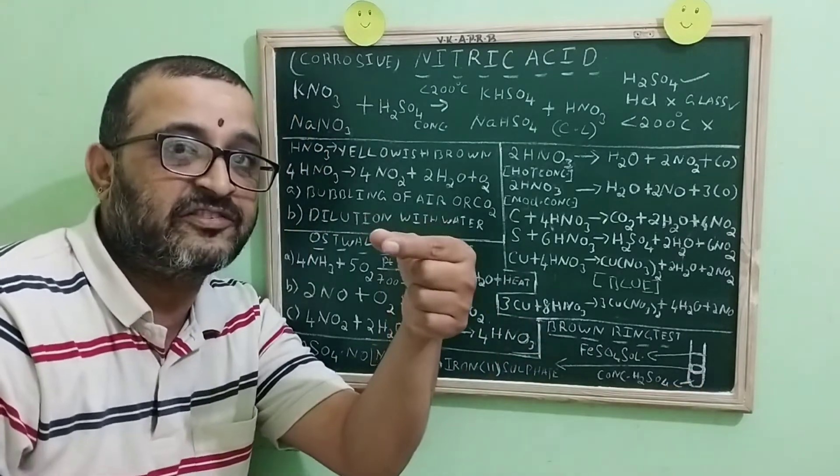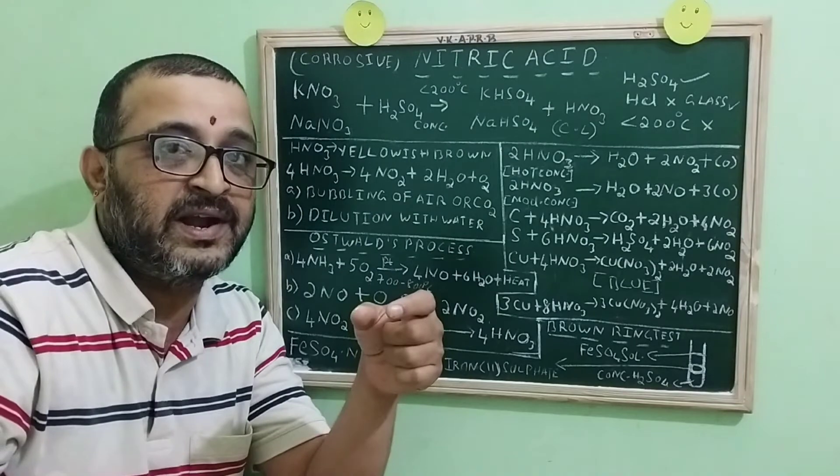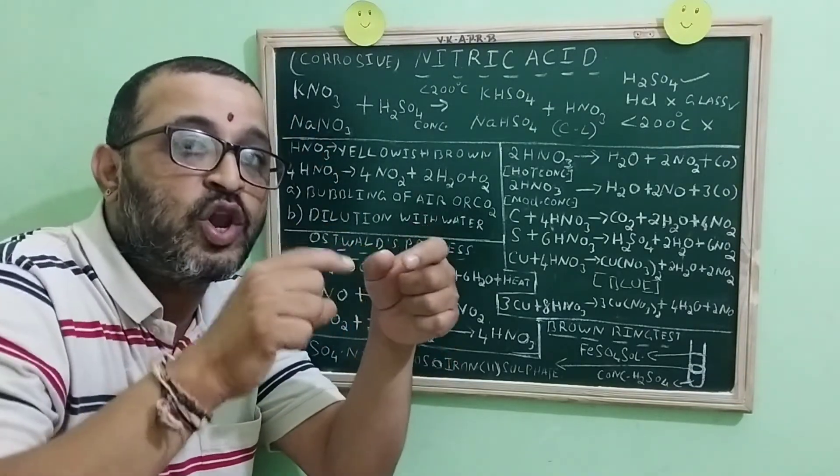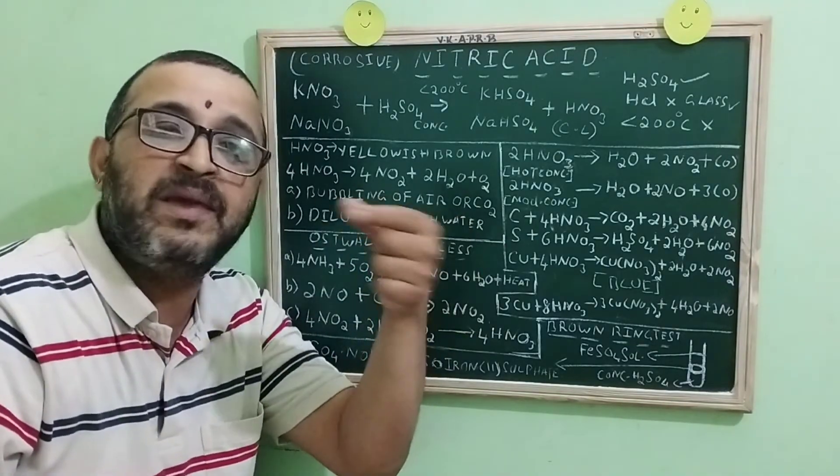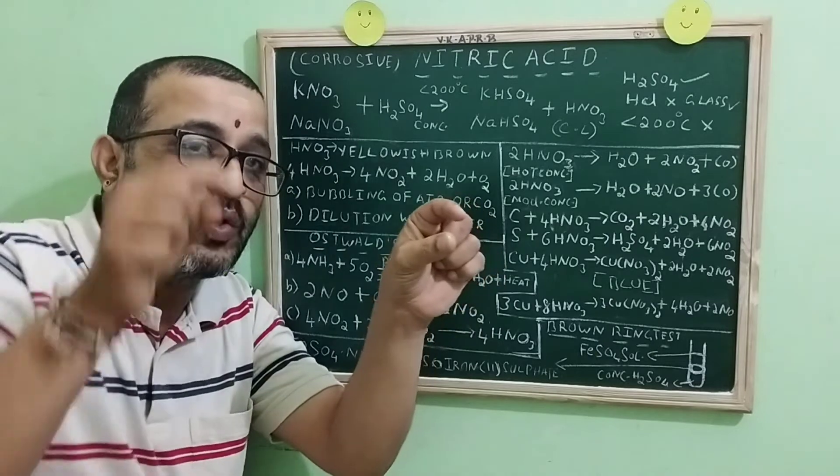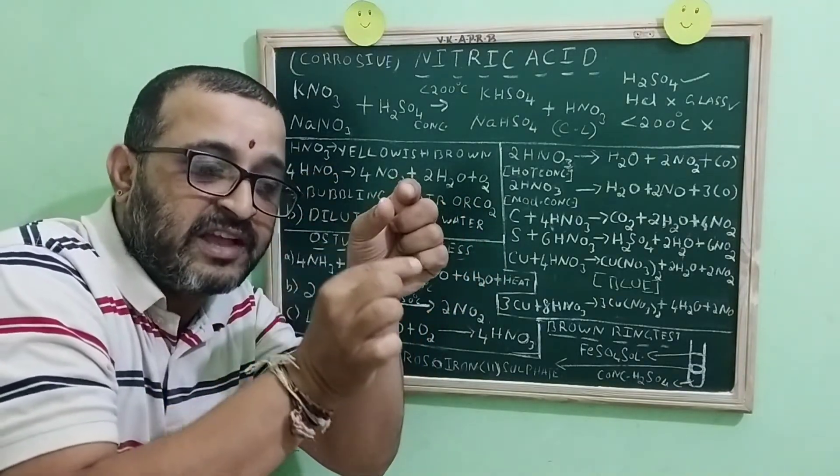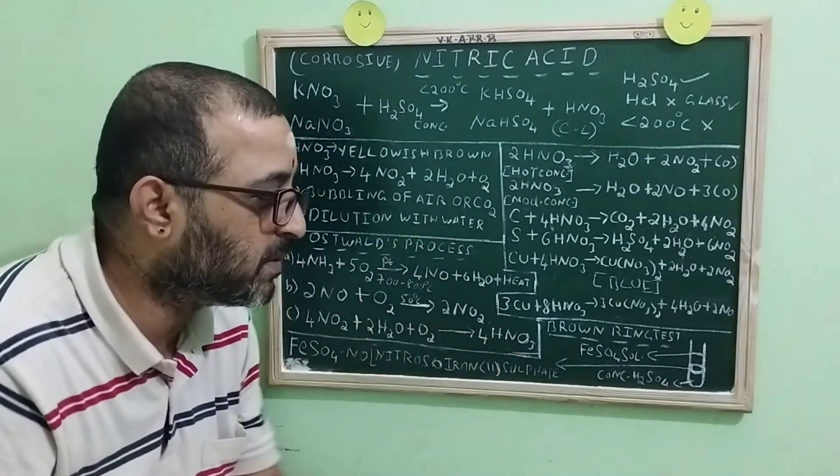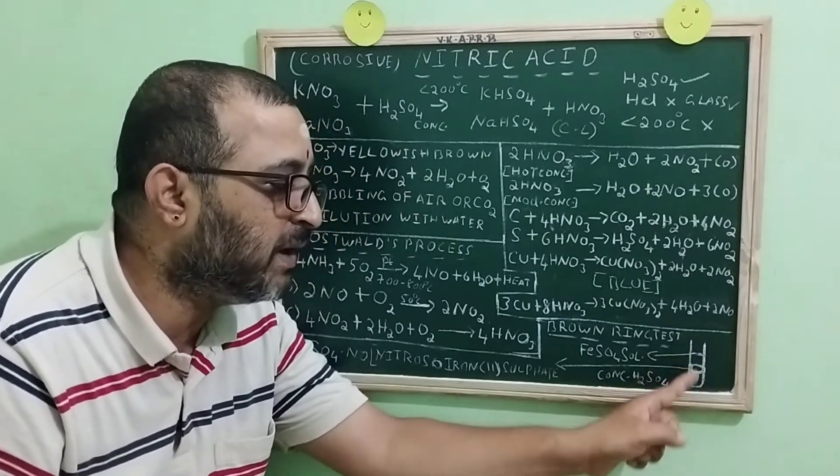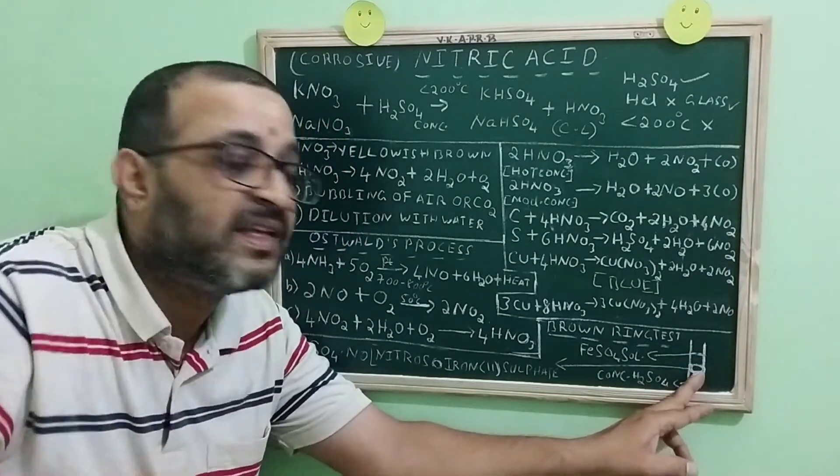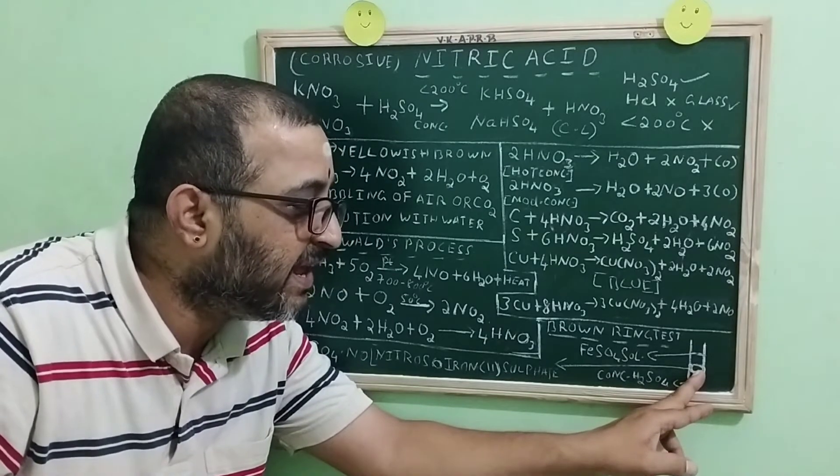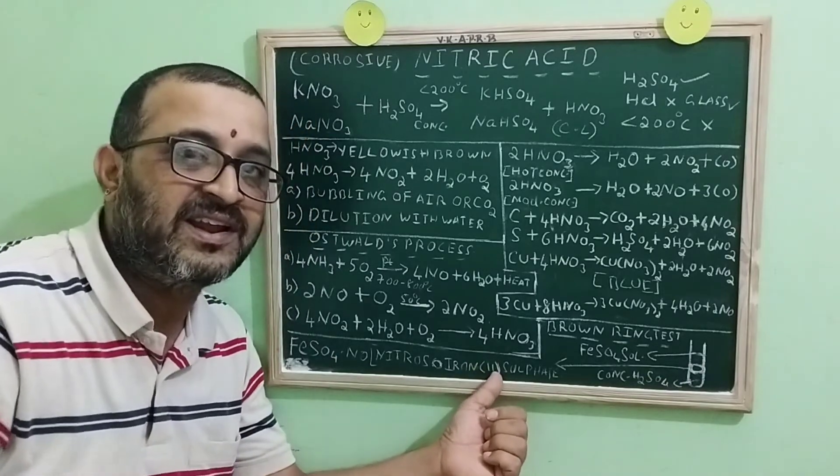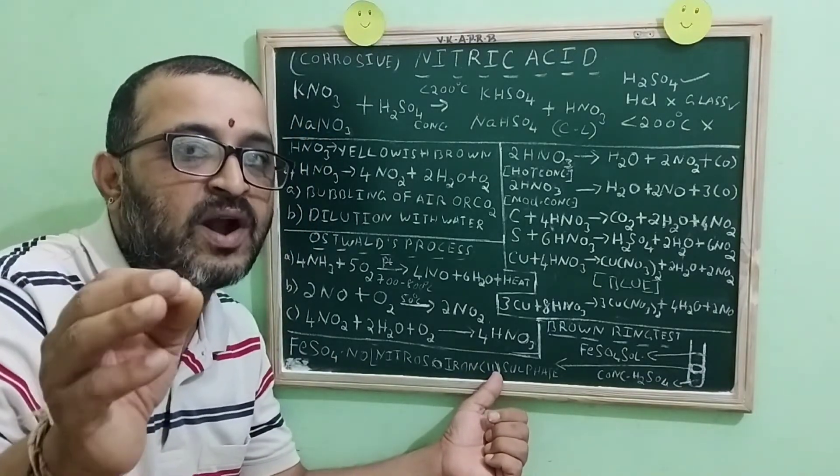What we do is that, initially, in the test tube, we take freshly prepared ferrous sulfate. To the same test tube, we add equal volume of nitric acid. Then we will mix the contents thoroughly. Then we slowly add concentrated sulfuric acid along the sides of the test tube. Sulfuric acid being heavier, it will go and settle in the bottom. A brown ring is formed at the junction of the two liquids, whose composition is nitroso ferrous sulfate, FeSO4·NO.